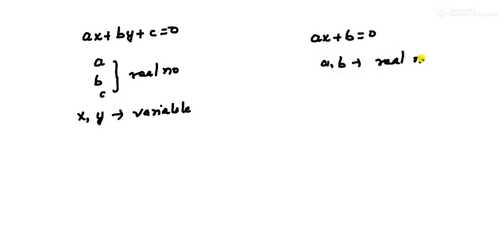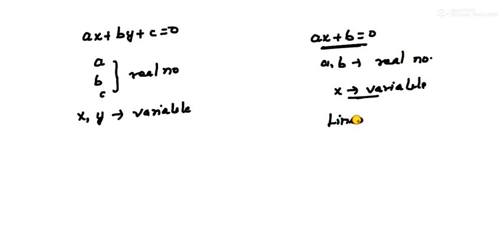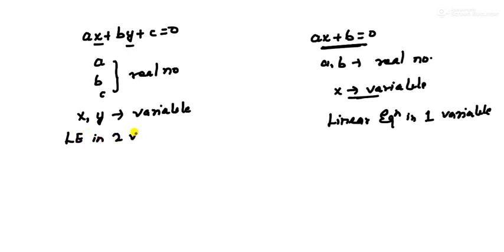First of all, what is a linear equation? Before that, what is an equation, and prior to that, what is an expression? If I write 4x + 4, and if I write 4x = 4, what is the difference between these two? The first one — 4x + 4 — is just an expression. And here, since you have an equal sign, we call this an equation. The difference is only this equal sign. An expression with an equal sign in it is called an equation.